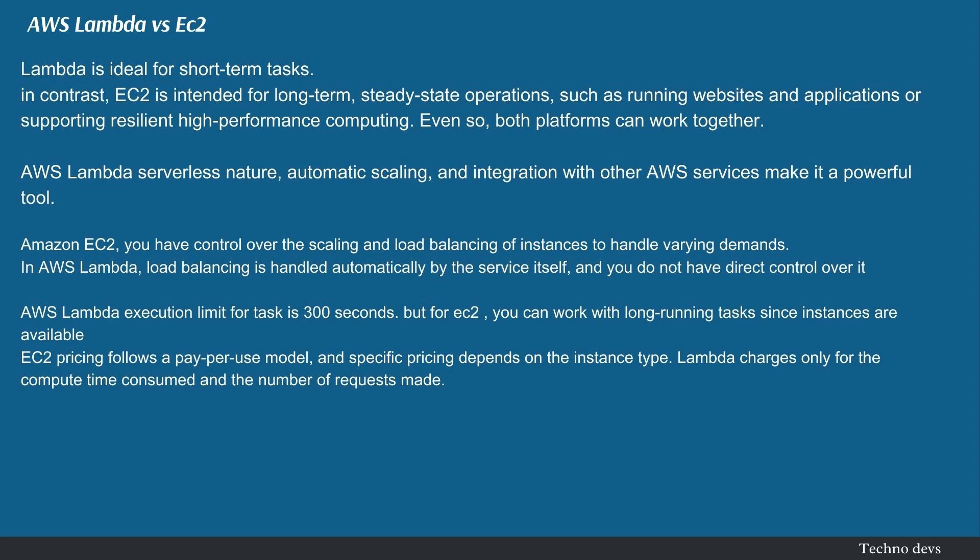Difference between AWS Lambda and EC2: AWS Lambda is ideal for short-term tasks, whereas EC2 is intended for long-term, steady-state operations, such as running websites, applications, or supporting resilient high-performance computing. Even so, both platforms can work together. AWS Lambda's serverless nature, automatic scaling, and integration with other AWS services make it a powerful tool. With Amazon EC2, you have control over the scaling and load balancing of instances to handle varying demands, while in AWS Lambda, load balancing is handled automatically by the service itself.